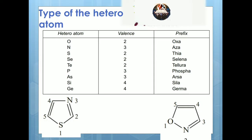The first point is the type of heteroatom. The heteroatom should be other than carbon — it can be oxygen, nitrogen, sulfur, selenium, phosphorus, silicon, and so on. According to the heteroatom, we give a prefix to the heterocyclic. For example, a structure having one sulfur and one nitrogen will have the prefix 'thia' and 'aza' — it is called thiazole. Another structure having one oxygen and one nitrogen will have 'oxa' and 'aza' — this is known as isoxazole.